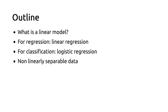More specifically, we will give you the definition of what a linear model is in two contexts: first, in the context of regression — predicting a continuous variable — in which case the method is called linear regression; and in the context of classification — predicting a discrete variable like a class — in which case the canonical method is called logistic regression. The name logistic regression is a bit misleading because it is really about classification.